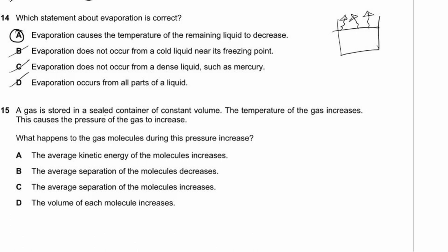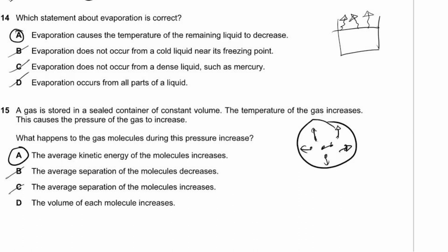Question 15. A gas is stored in a sealed container of constant volume and its temperature increases. When heated, gas molecules move faster, causing a greater number of collisions with the walls, increasing pressure. Option A is correct: the average kinetic energy of the molecules increases. Options B and C are wrong — the volume is fixed, so separation can't change. Option D is wrong — molecule volume doesn't change.